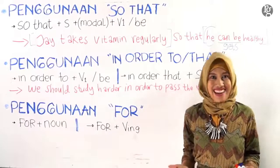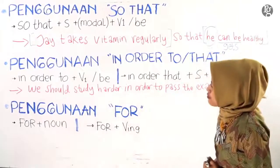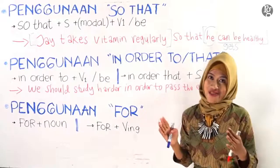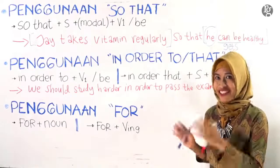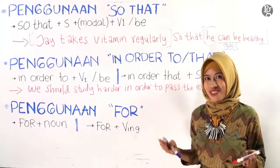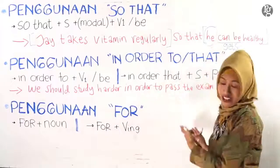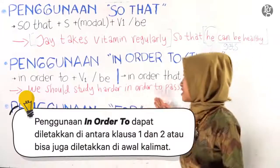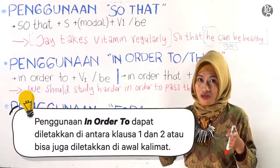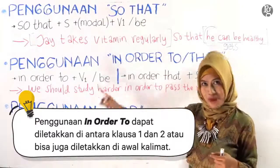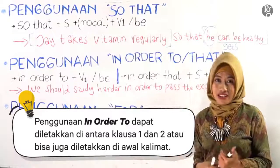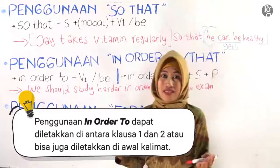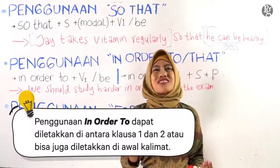We should study harder in order to pass the exam. Untuk konjungsi yang kedua ini maknanya sama yaitu sehingga, supaya, agar. Untuk penggunaan 'in order to', kalian bisa membubuhkan 'in order to' di tengah klausa. Jadi kalian tadi sudah kenal, klausa pertama dan klausa kedua sama seperti 'so that' harus ada dua klausa. Jadi 'in order to' di sini bisa dibubuhkan di tengah klausa atau kalian pindah ke depan. Jadi kalian bisa mengatakan: we should study harder in order to pass the exam, atau in order to pass the exam, we should study harder.